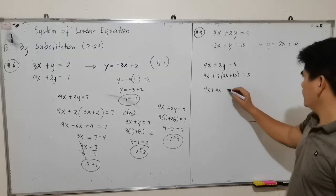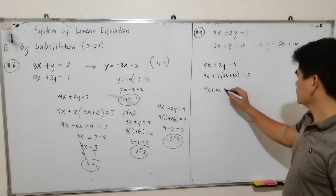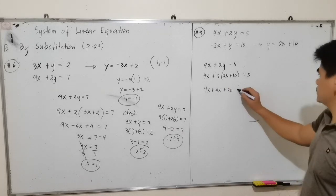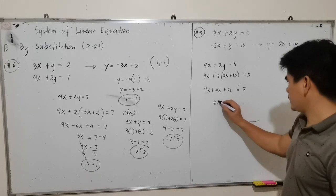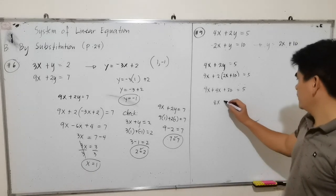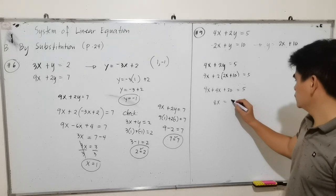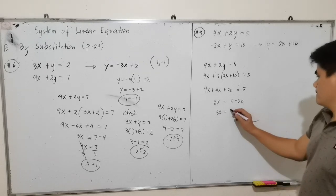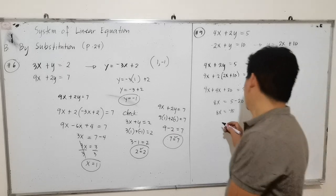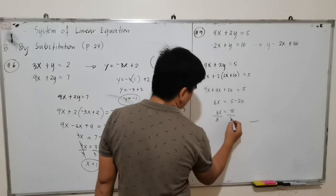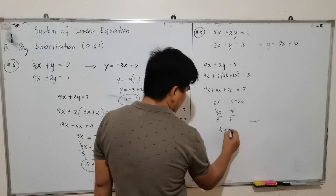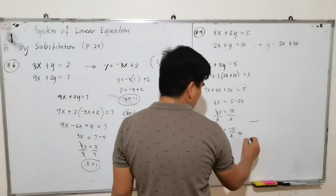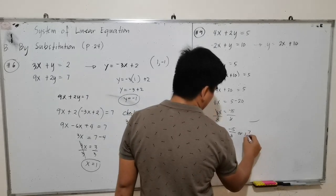Substituting y equals 2x plus 10: 4x plus 2 times (2x plus 10) equals 5. Expanding: 2 times 2x is 4x, and 2 times 10 is 20. So 4x plus 4x plus 20 equals 5, giving 8x equals 5 minus 20, which is 8x equals negative 15. Dividing both sides by 8, x equals negative 15 over 8.